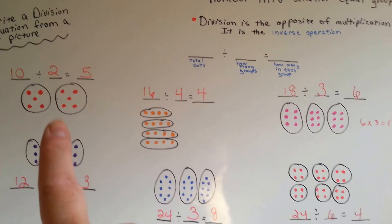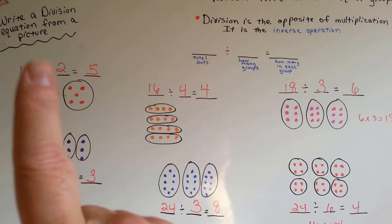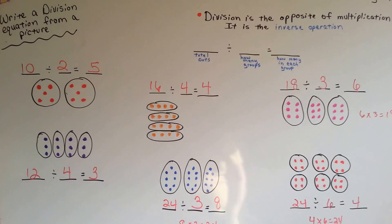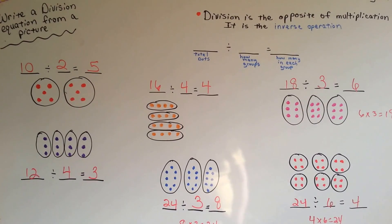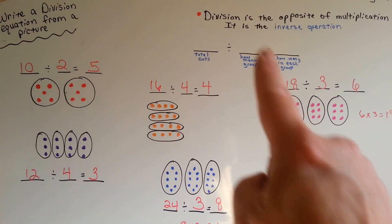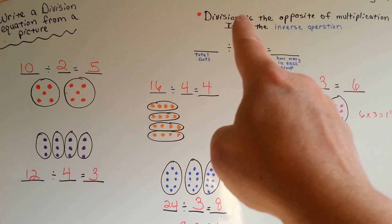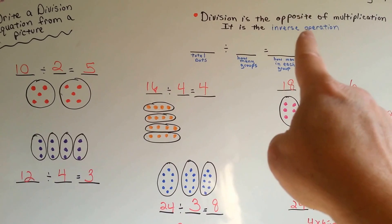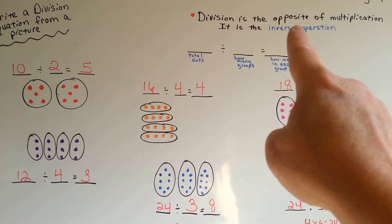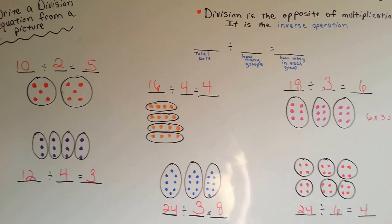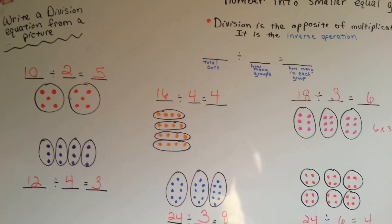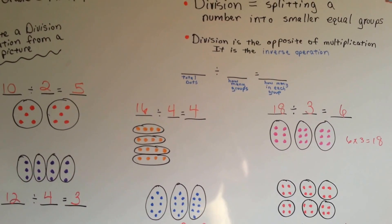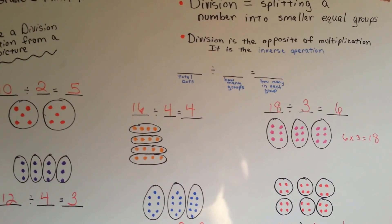That is how you write a division equation from a picture. Wasn't that easy? You just count the total number of items, count how many groups there are, and how many are in each group, and you've got it. See you next video.